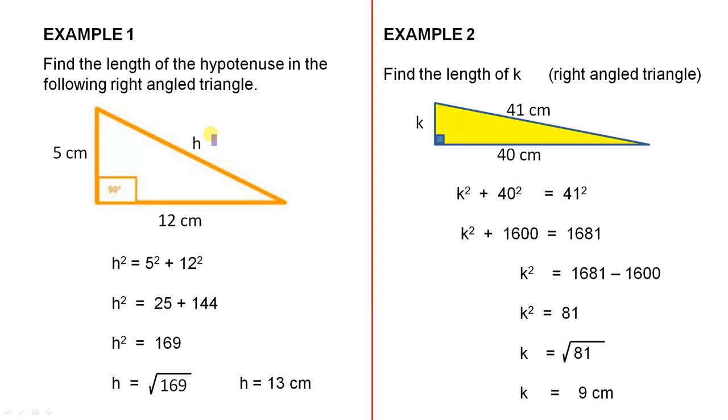Now Pythagoras' Theorem says that the square on the hypotenuse, that is h squared, equals the sum of the squares on the other two sides. So when we write down the actual formula, we have h² = 5² + 12². And you can see the square on the hypotenuse equals the sum of the squares on the other two sides.